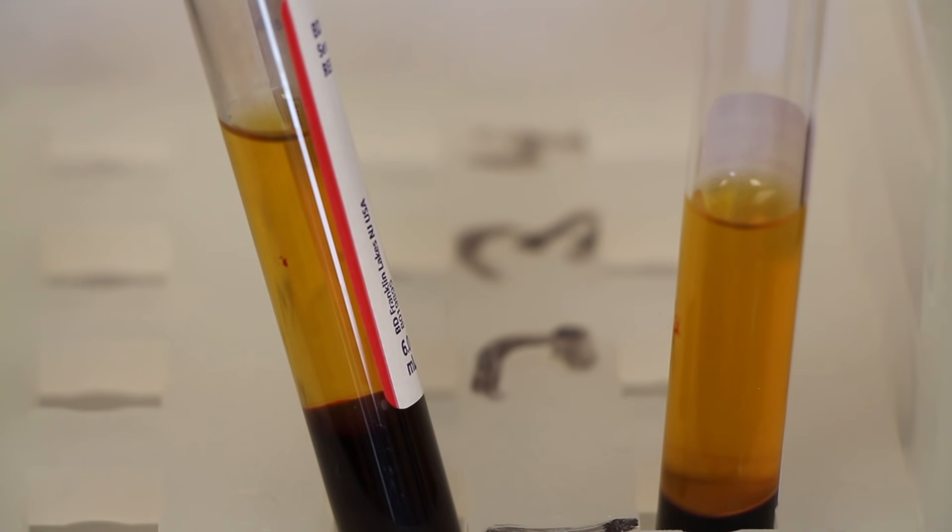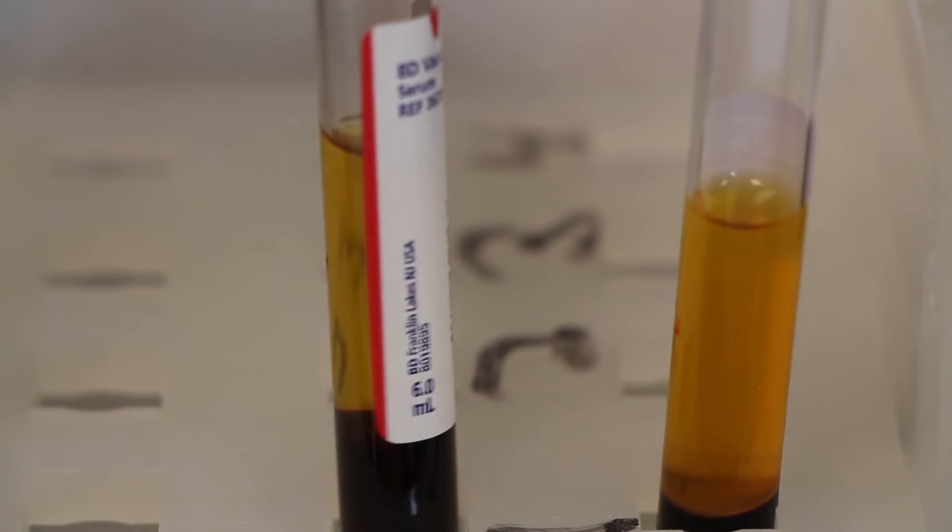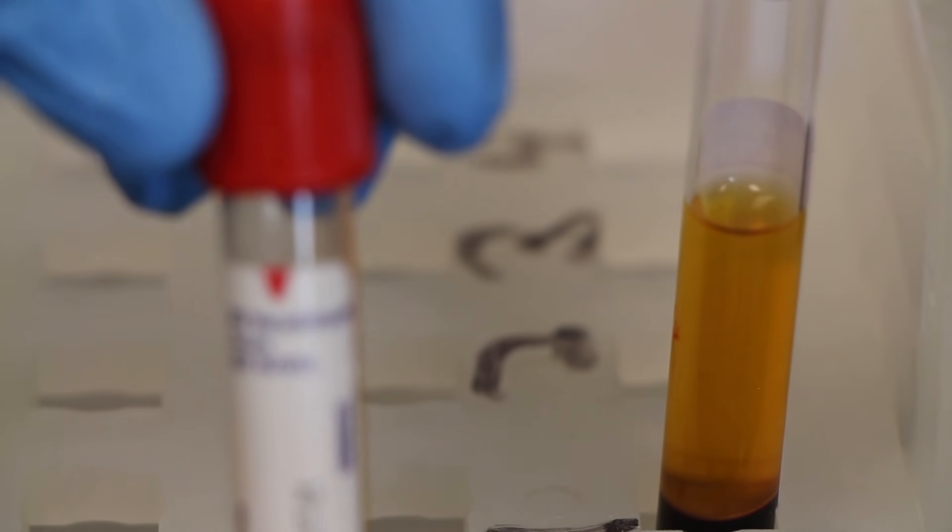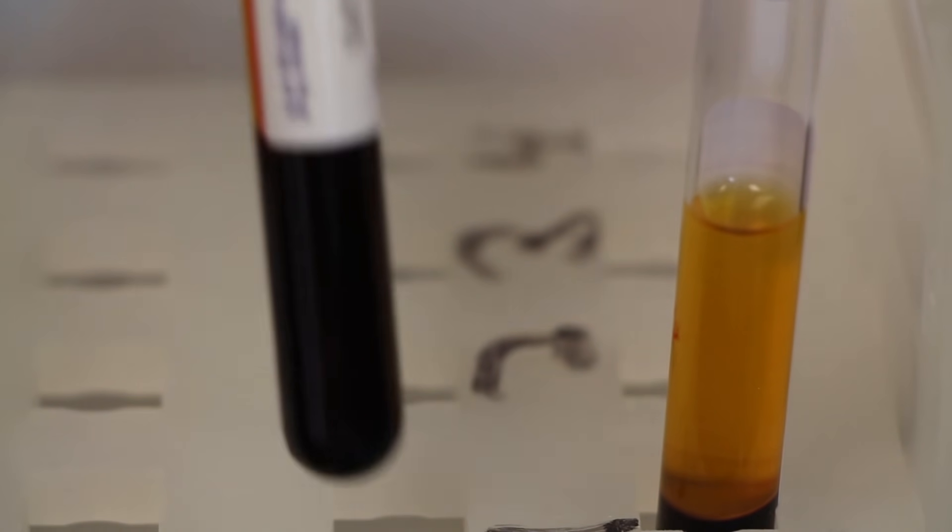If you look at your tubes after they've been centrifuged, there's going to be a clear separation between the blood cells at the bottom and the clear liquid on top. What that clear liquid is depends on the type of tube, whether it was a coagulant or an anticoagulant tube.